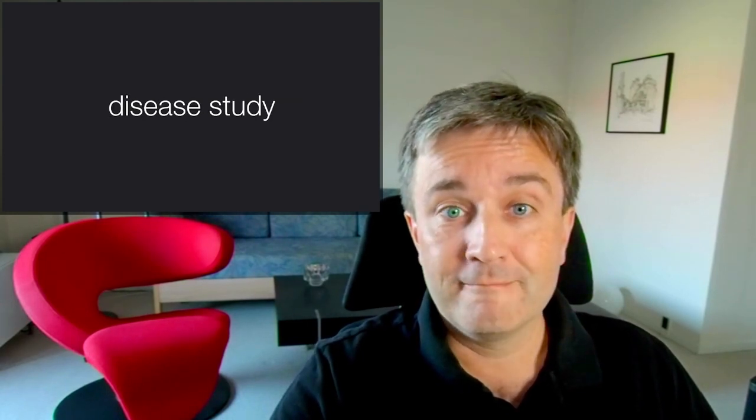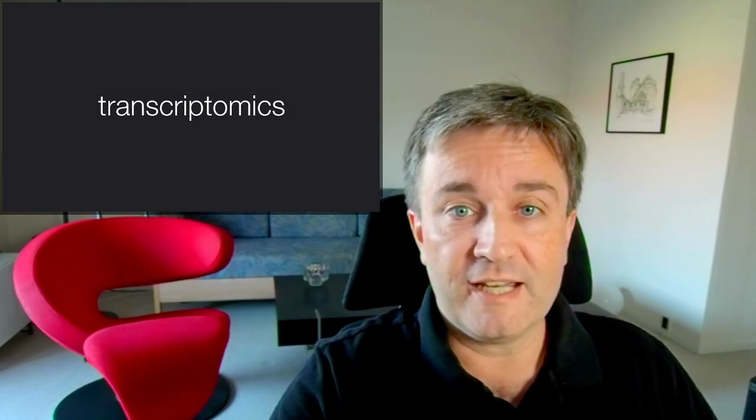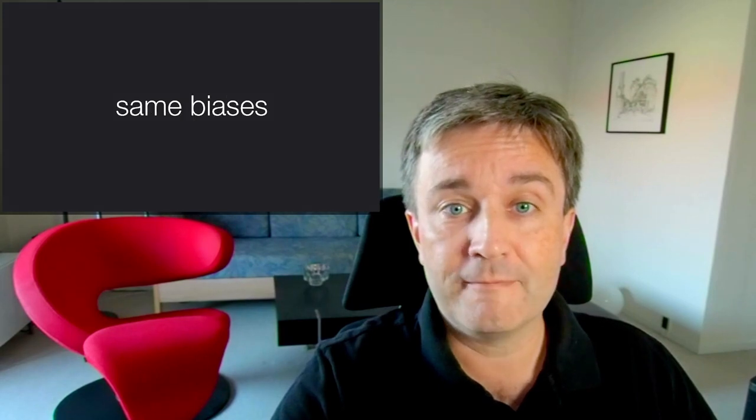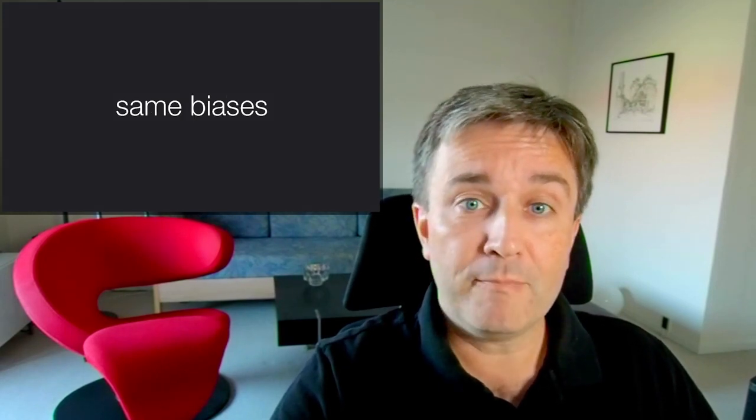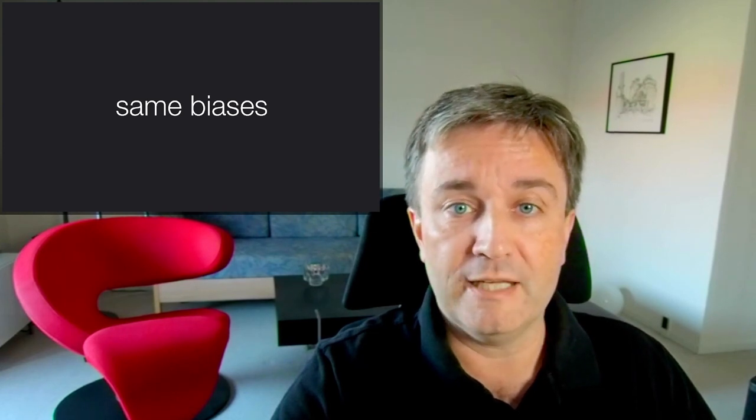If your gene list thus comes from either a disease study or was produced using techniques like transcriptomics or proteomics that have abundance biases, you will have the same biases on your list as you have in the database that you're using for doing enrichment analysis.